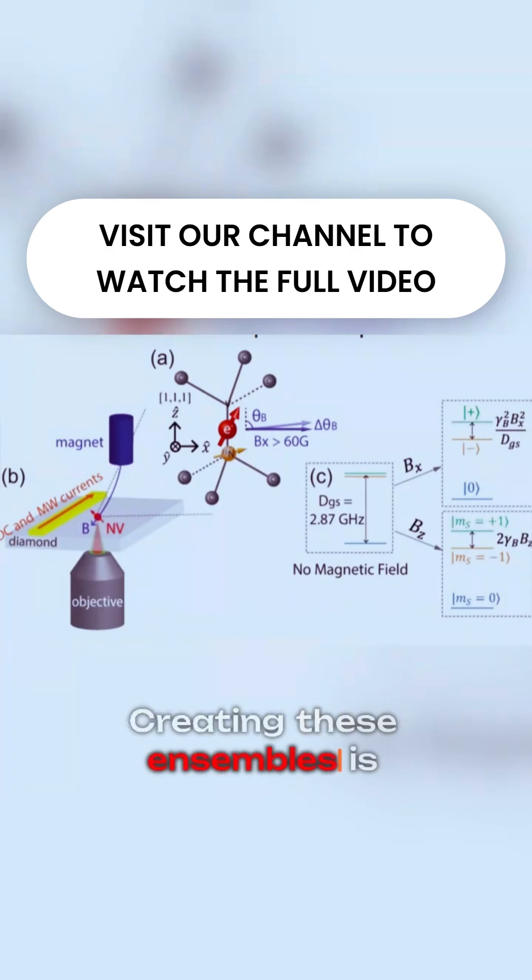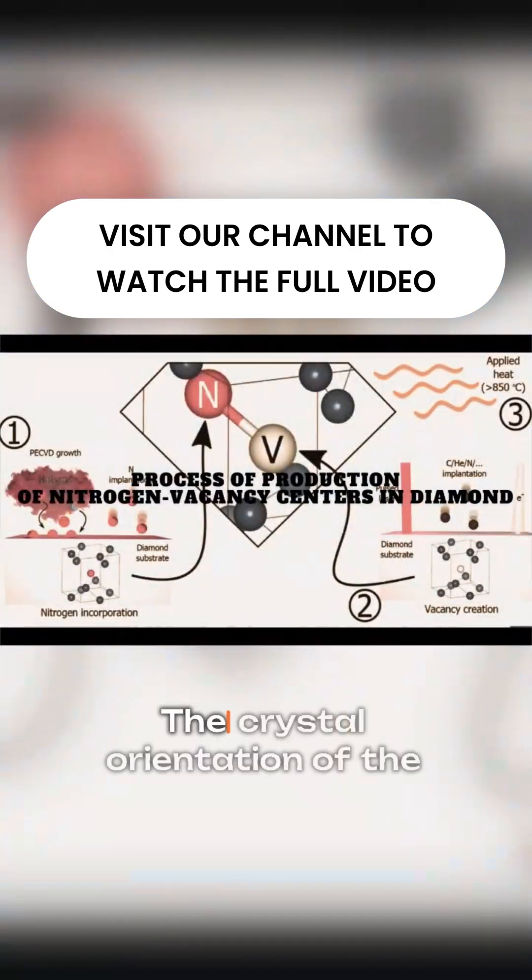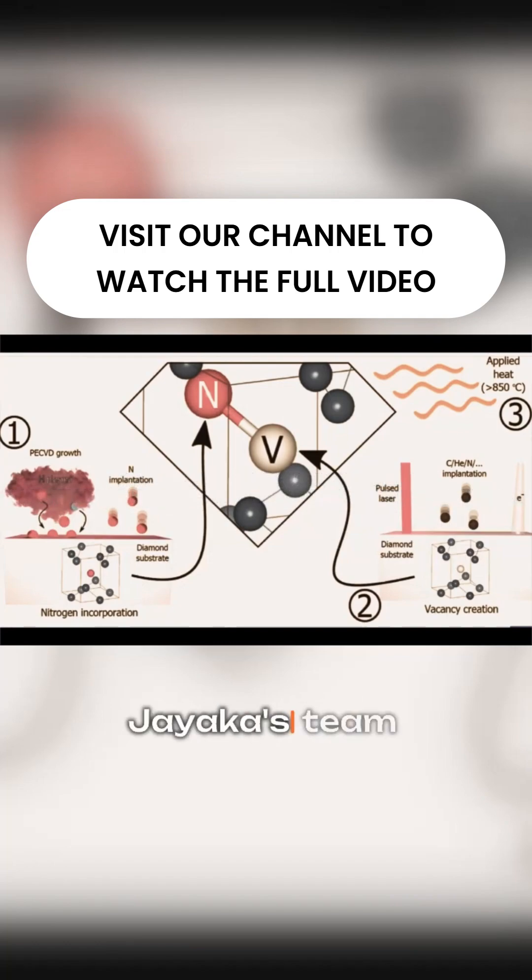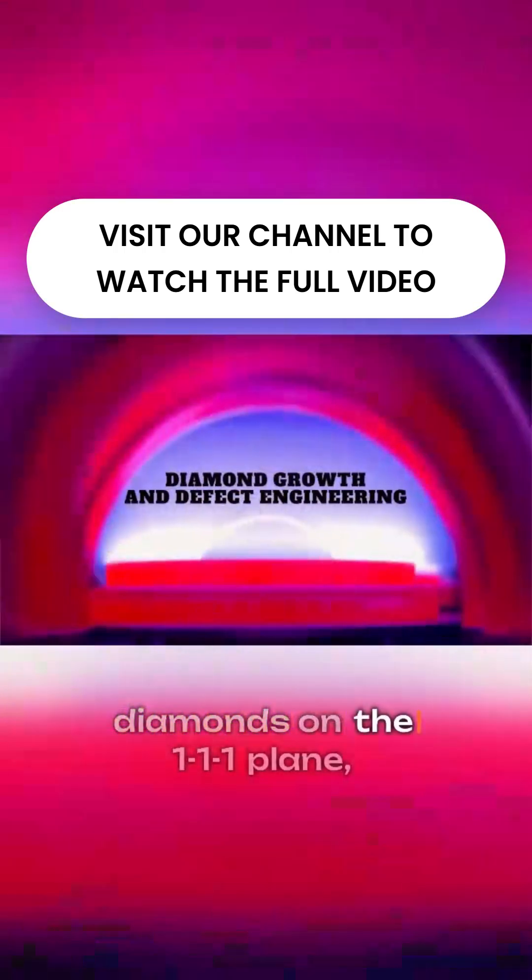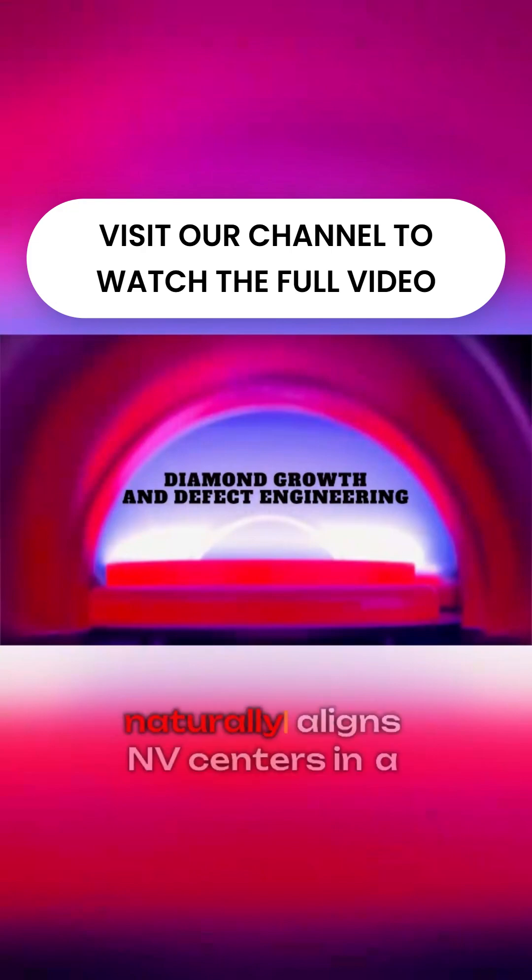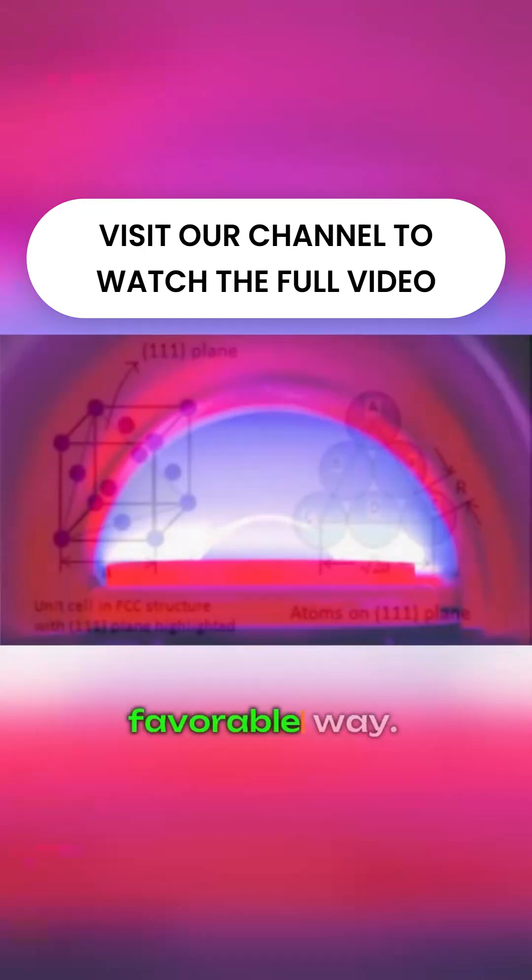Creating these ensembles is no simple task. The crystal orientation of the diamond is crucial. JAGA's team grows diamonds on the 111 plane, which naturally aligns NV centers in a favorable way.